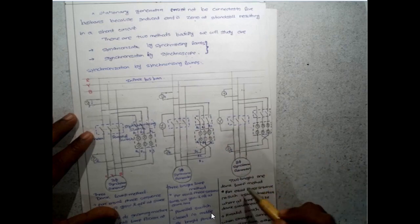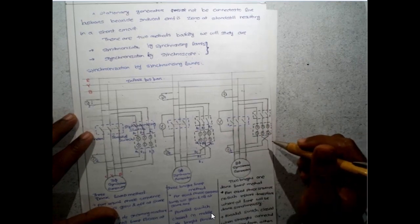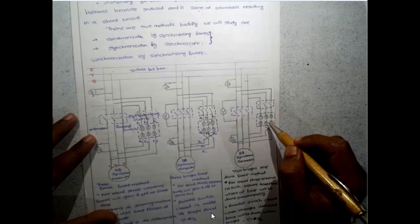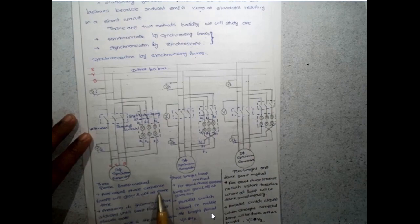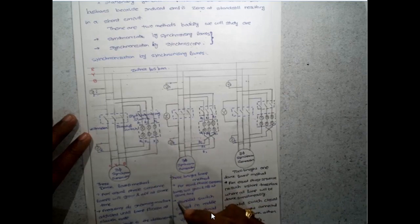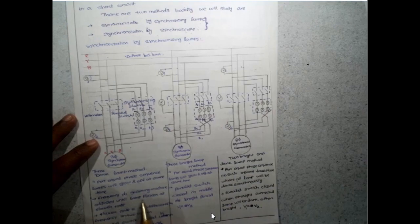Simply put, one method is straight connected, one is cross connected. In the two bright one dark lamp method, the first is straight connected and the other two are cross connected — the exact method we are going to use in our practical, as the panel is connected accordingly. For equal phase sequence in this method, the lamps will glow and go off at the same time. The frequency of the incoming machine is adjusted until the lamp flicker rate slows down.